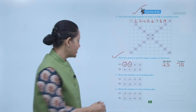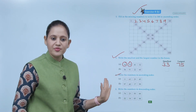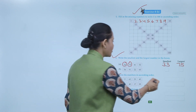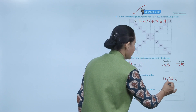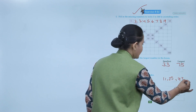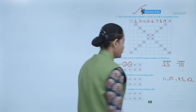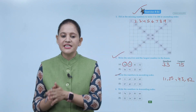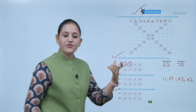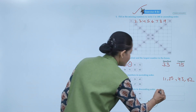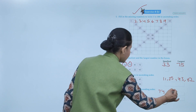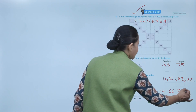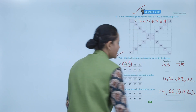Next, write the numbers in ascending order — ascending means increasing order, starting from the smallest and moving to the greatest. Among these numbers: 23, 56, 66, 74. Note that this arrangement shown is descending order.